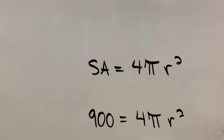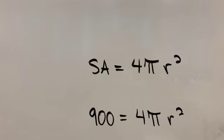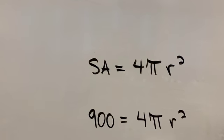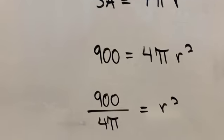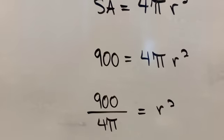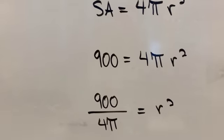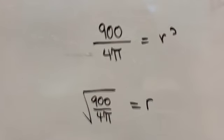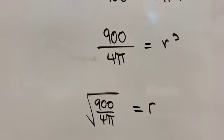So now my job is just to isolate r all by itself. What's being done to r? We're multiplying it by 4π, so we would want to divide by 4π to get that to the other side. Careful on your calculator if you're doing that in a single step. You'll have to put the 4π in brackets on the bottom. But then you also need to undo that squared, so the inverse operation is to do the square root.